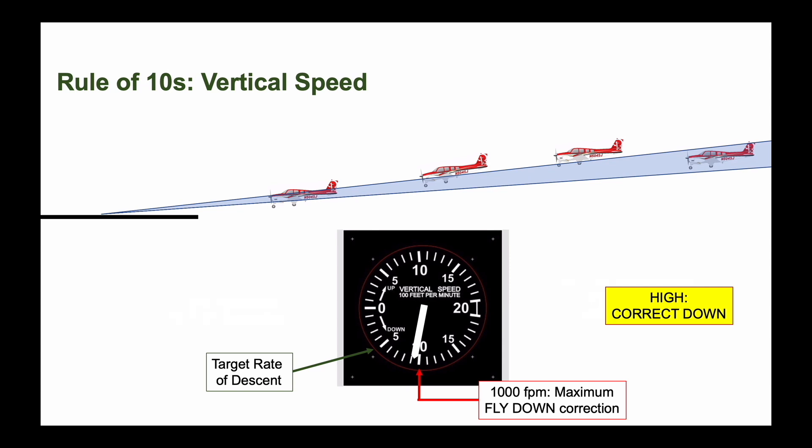For vertical speed then, we also have a rule of 10s. A 10 times 100 feet per minute range of permissible vertical speeds. If you need to exceed this range to get back on glide path, or especially if you look down and see yourself outside of this range, miss the approach right away.